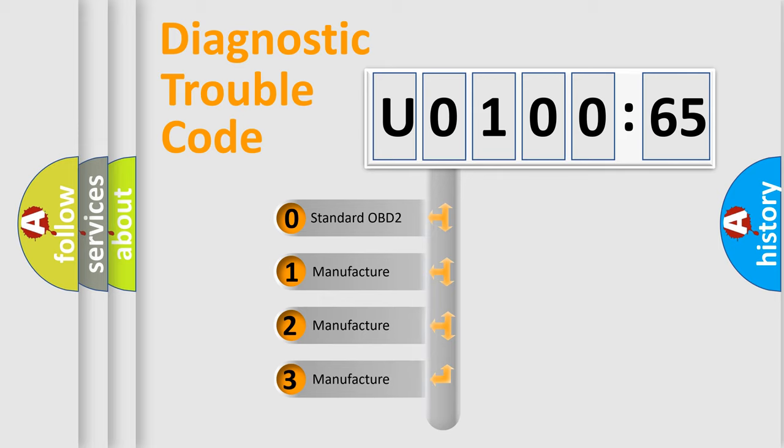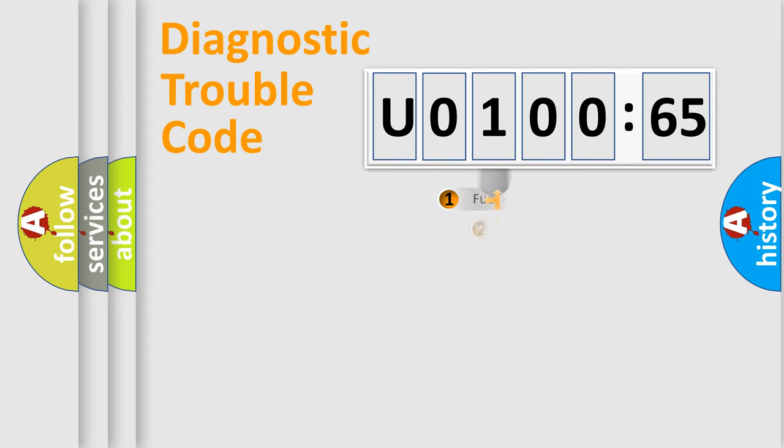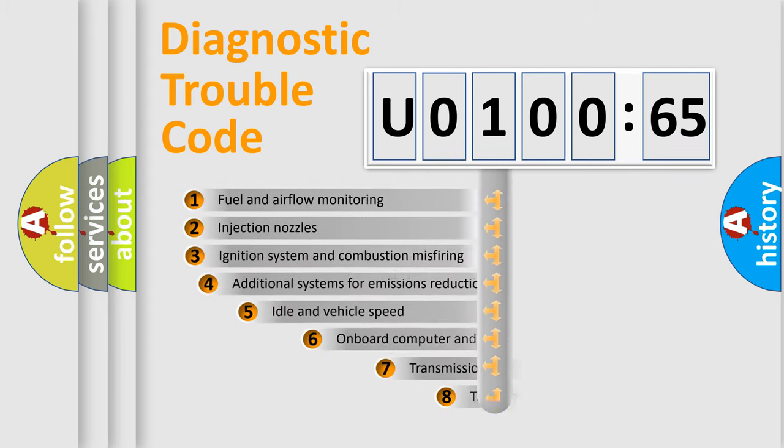If the second character is expressed as 0, it is a standardized error. In the case of numbers 1, 2, or 3, it is a more specific expression of the car-specific error.